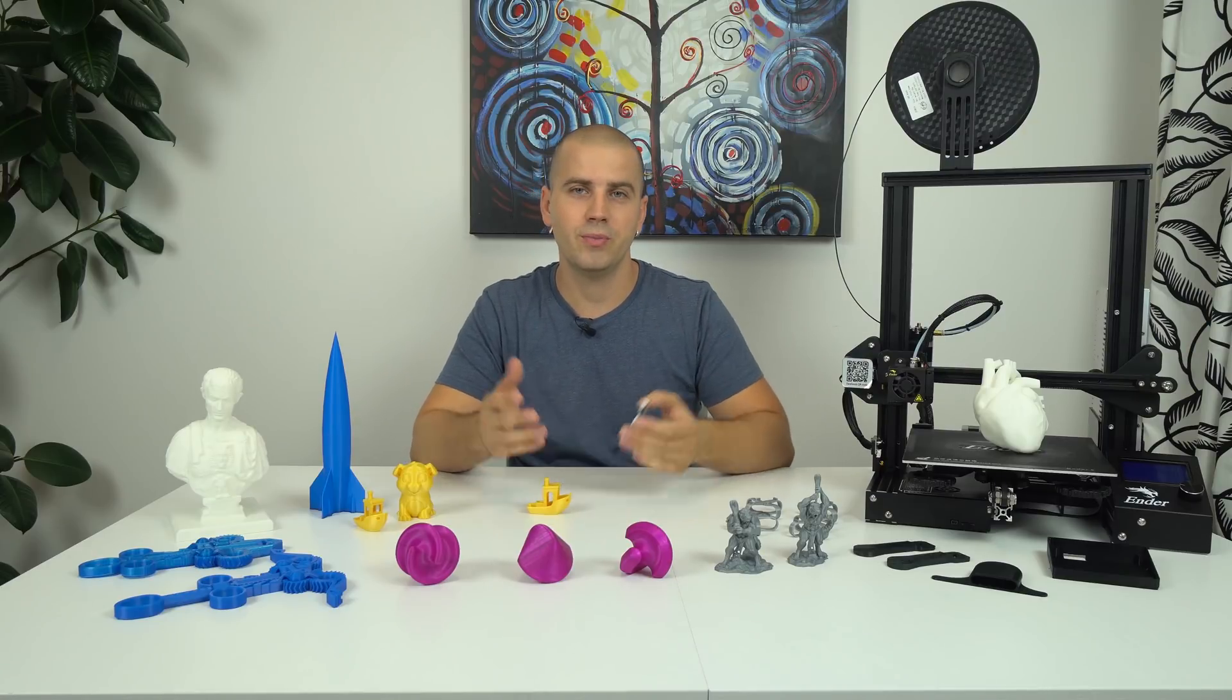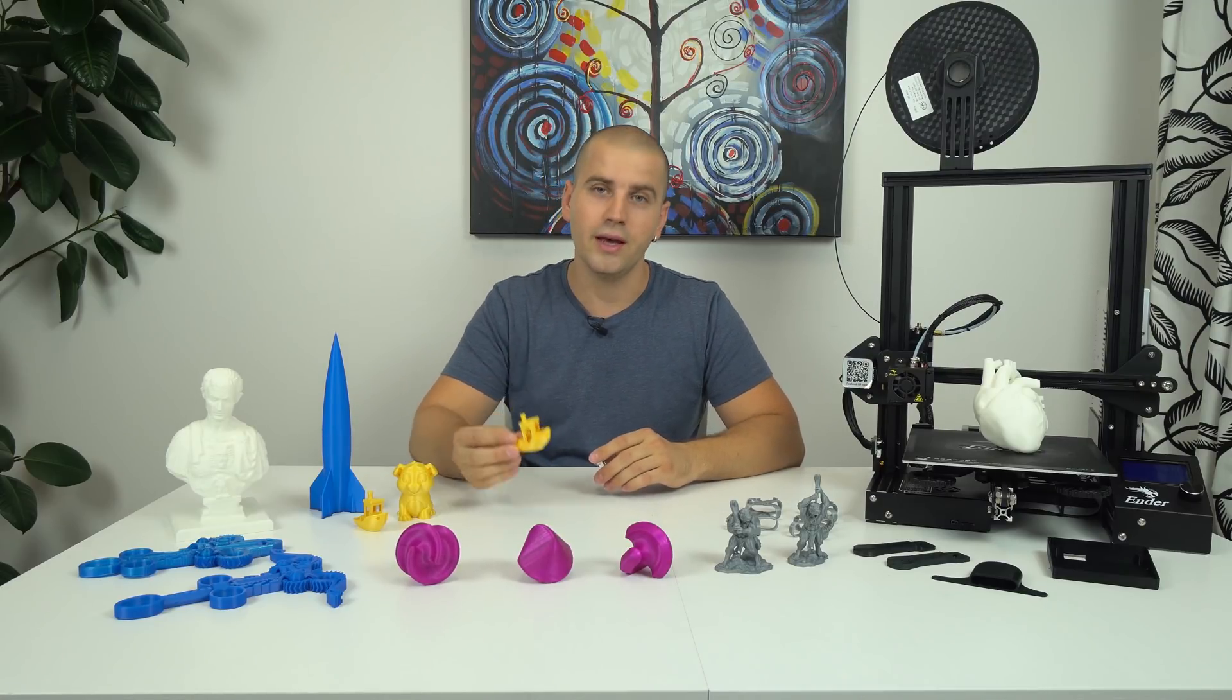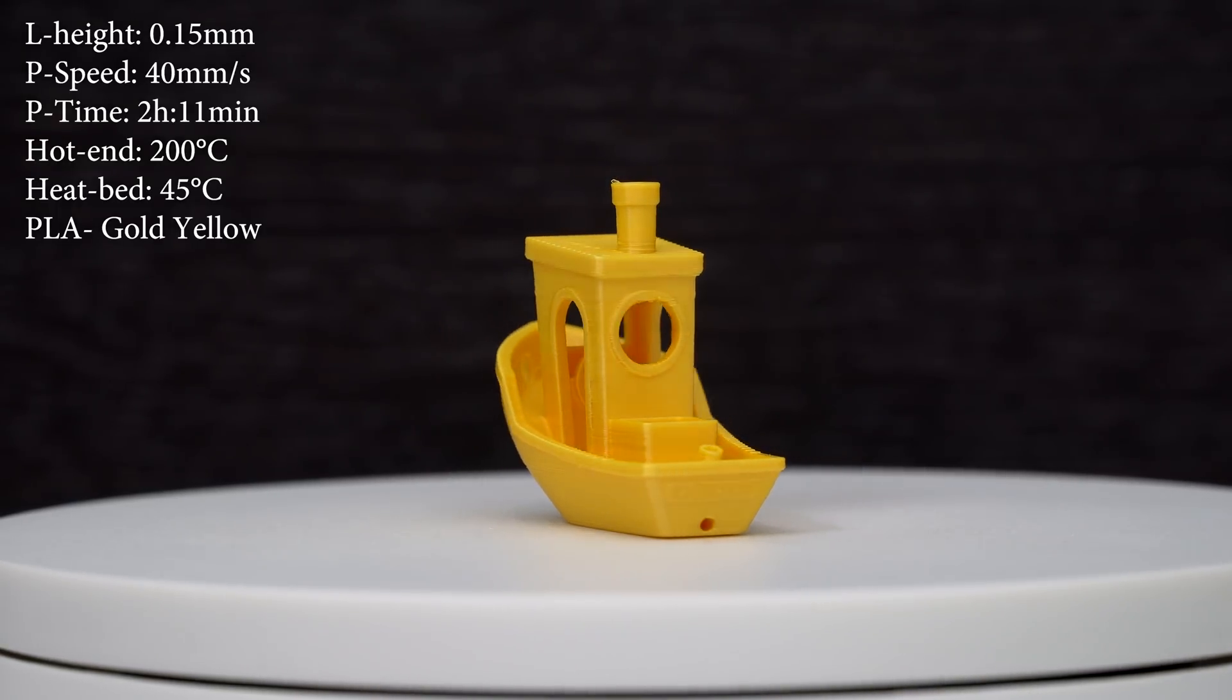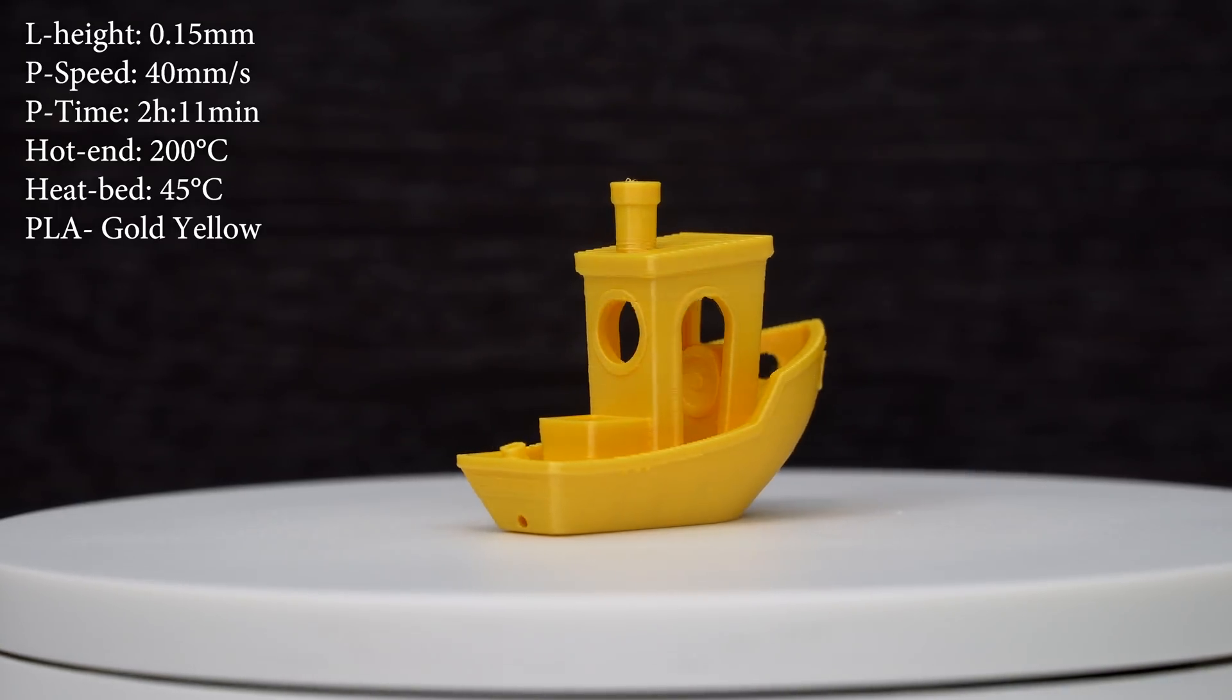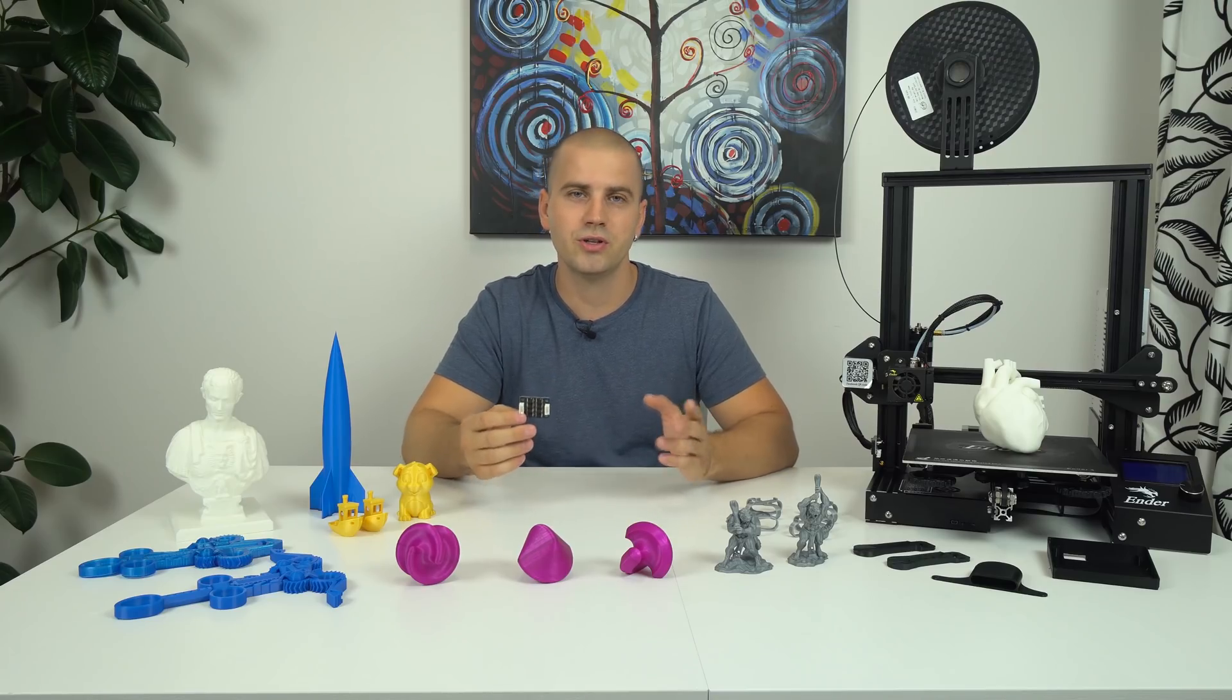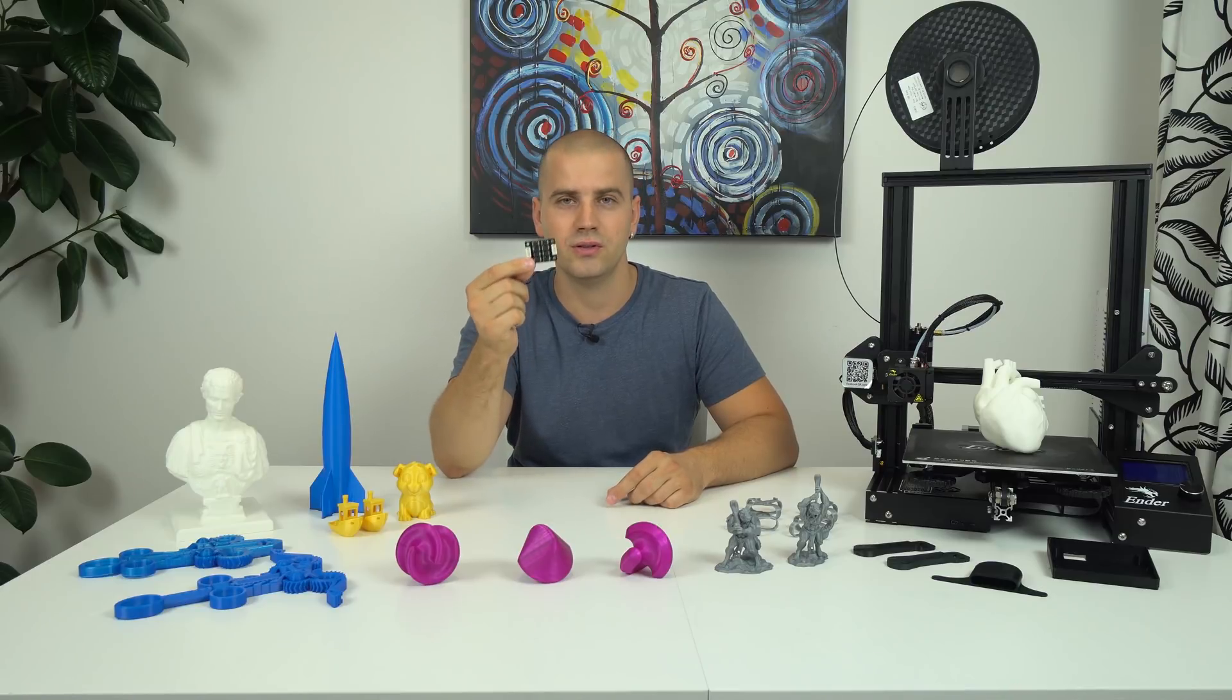After this small upgrade I printed 3D Benchy again using the same Gcode and look at the difference. It looks much better now, no more Salmon Skin. It's completely gone and I highly recommend this cheap upgrade, I'll place the link in the video description where you can find these 8 diode TL smoothers.